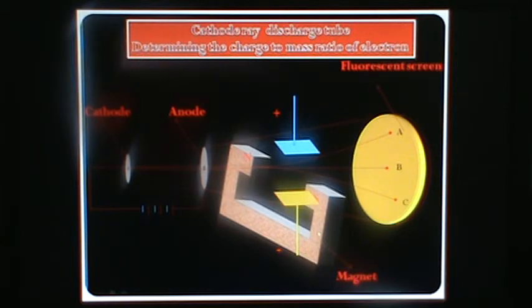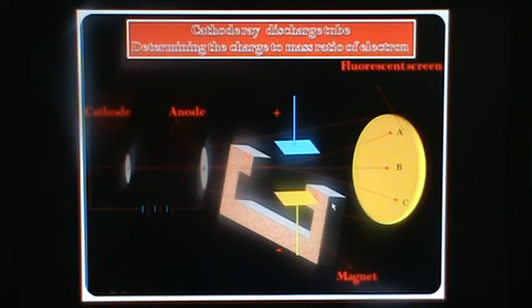And when the magnetic field is applied, these negative charge cathode particles are attracted by the south pole. So this is how the cathode ray discharge tube works. Thank you.